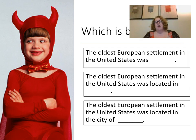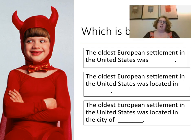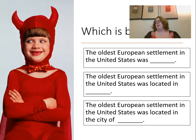If I say 'the oldest European settlement in the United States was located in blank,' a student might say 'Florida' — which is correct, but if I was looking for the city name, it wouldn't be the answer I wanted. All of these problems would be solved if I instead asked 'In what city was the oldest European settlement located?'